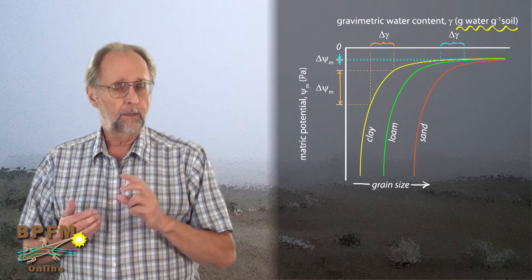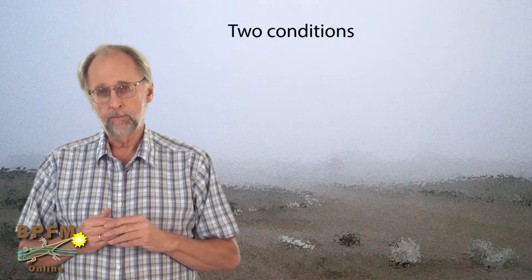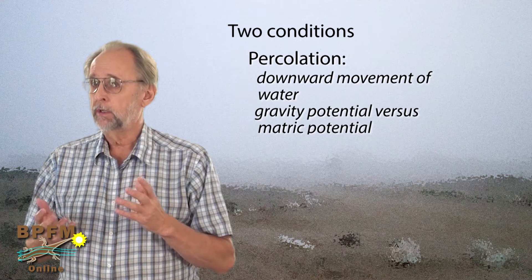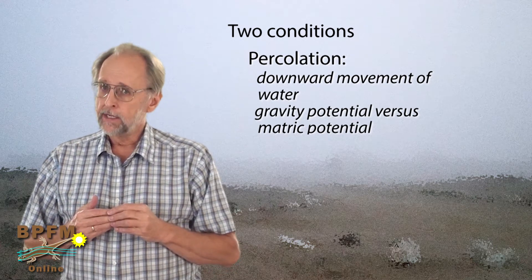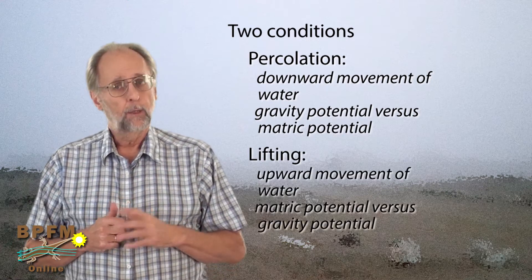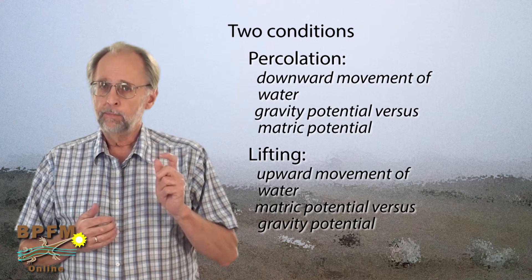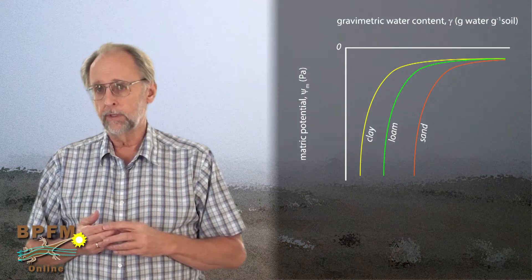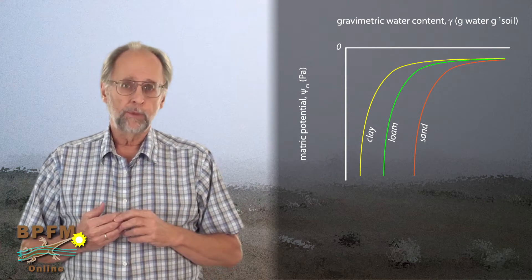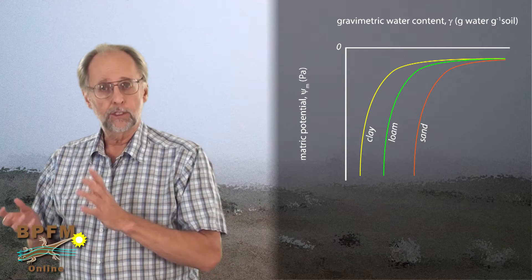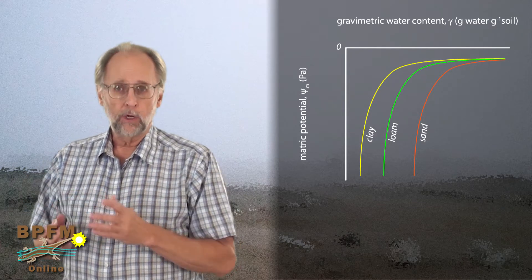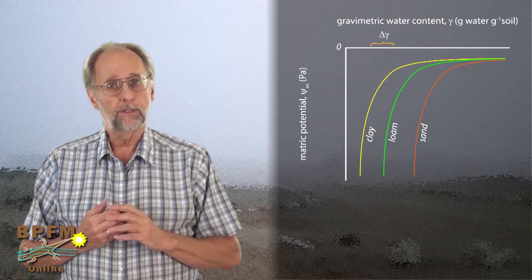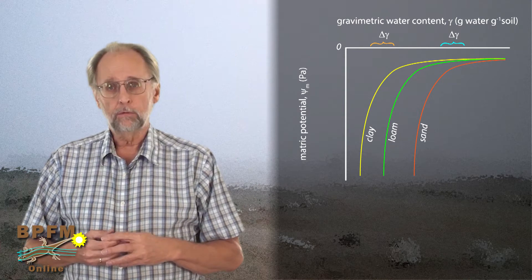We're going to use our Hele-Shaw cell to demonstrate two ways that matric potential and gravity potential can interact. The first will look at downward percolation of a known quantity of water — 10 cubic centimeters or 10 milliliters — applied to the top of the soil. The second will look at how effectively water is drawn upward through the soil by matrix forces working against gravity. In both instances, we're going to use a relatively coarse-grained sandy soil from the western Kalahari, taken from along the Nosab River in southern Namibia. We're going to compare water movements in sand dried in the sun against sand containing its normal water content.